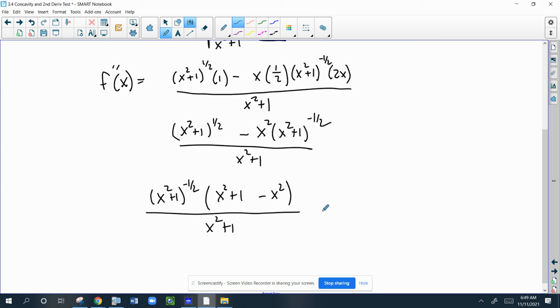So I'm going to have X squared plus one to the first minus X squared. So the second derivative would equal the top, which simplifies very nicely. X squared minus X squared is zero, so the top just simplifies to one. The bottom with this coming down would be X squared plus one to the one half times X squared plus one to the first, so it's X squared plus one to the three halves.